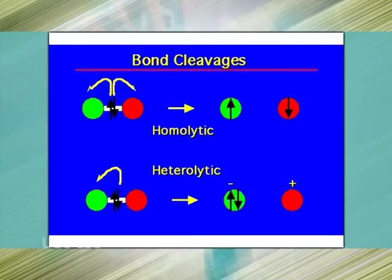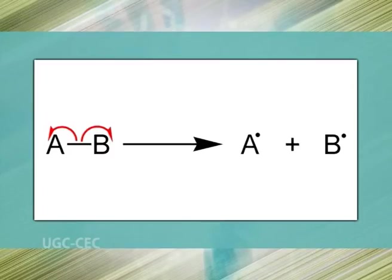Now let's talk about the cleavage of covalent bonds. Bond cleavage is the splitting of chemical bonds. In general, there are two classifications: homolytic and heterolytic, depending on the nature of the process. In homolytic cleavage, or homolysis, the two electrons in a cleaved covalent bond are divided equally between the products. This process is known as radical fission.